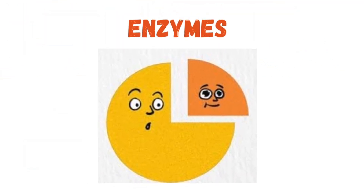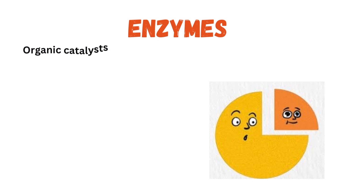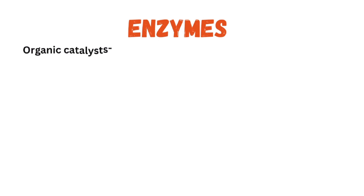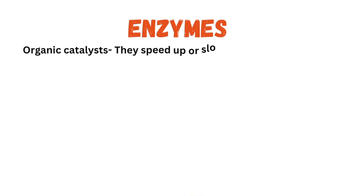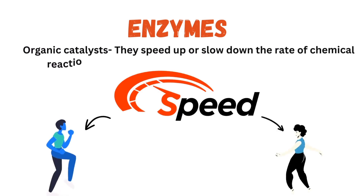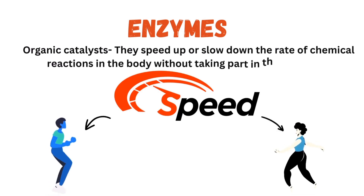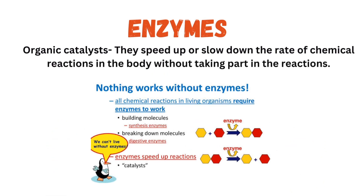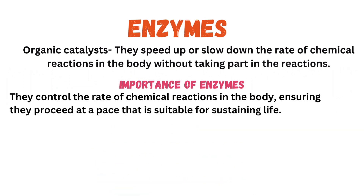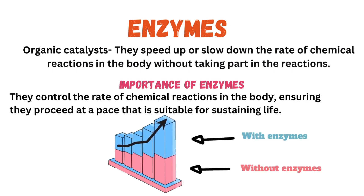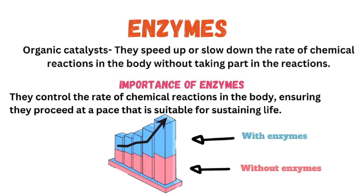Enzymes are organic catalysts. They are considered organic because they are made up of molecules such as carbon and hydrogen, and they are catalysts because they either speed up or slow down the rate of chemical reactions in the body without taking part in the reactions. By controlling the rate of chemical reactions, they ensure these reactions proceed at a rate sufficient to sustain life. Without enzymes, some chemical reactions would occur too slowly to support body functions.